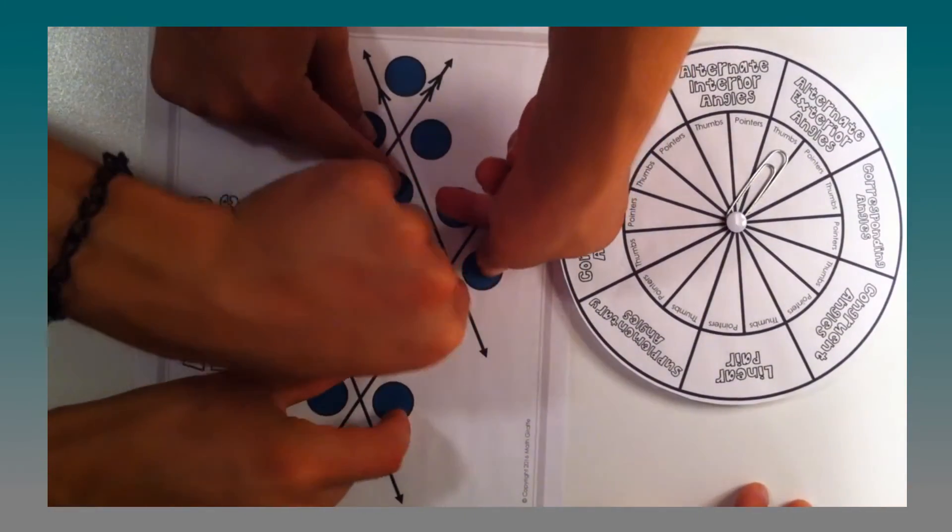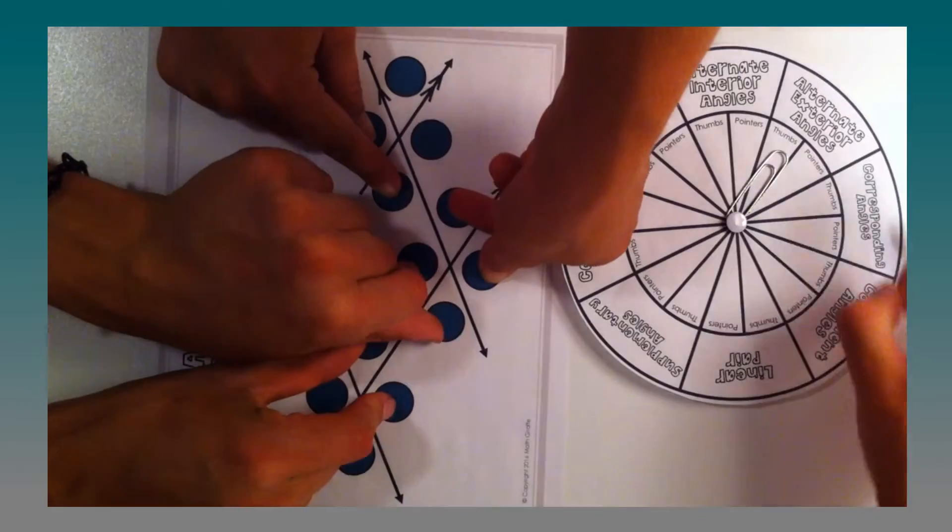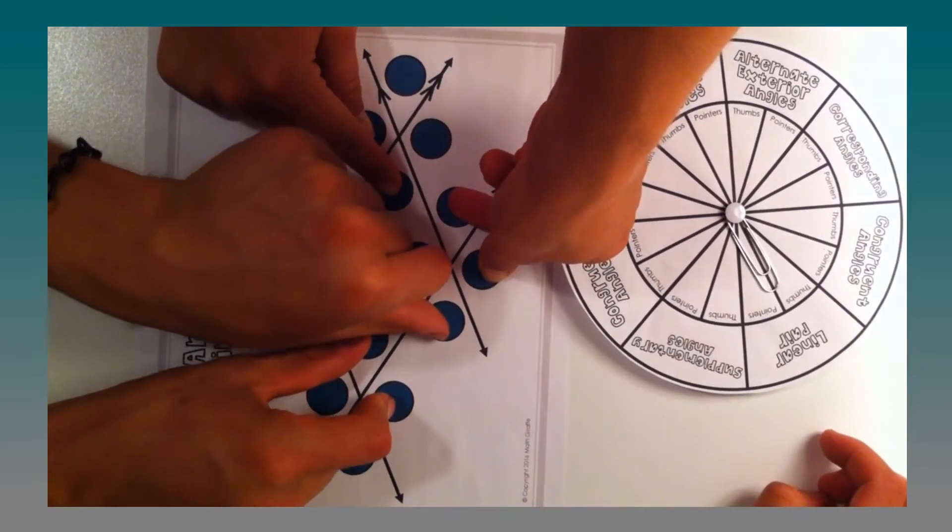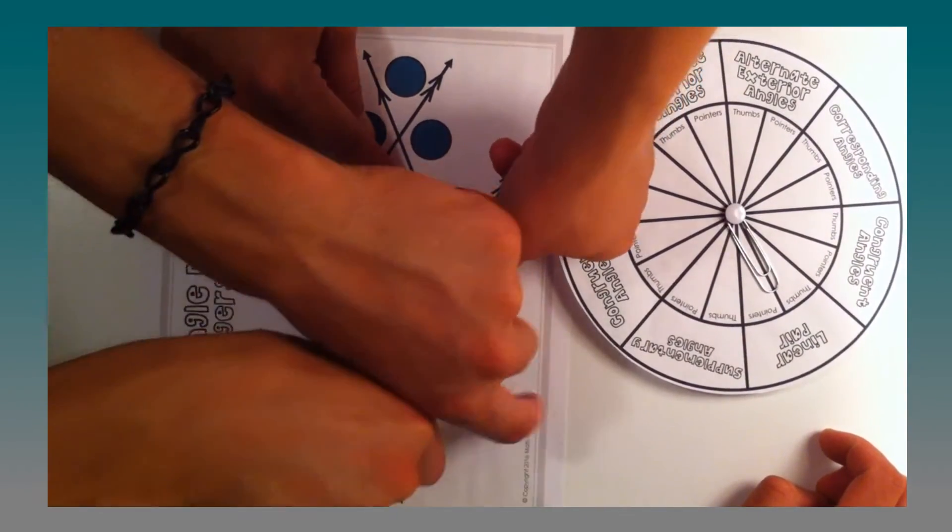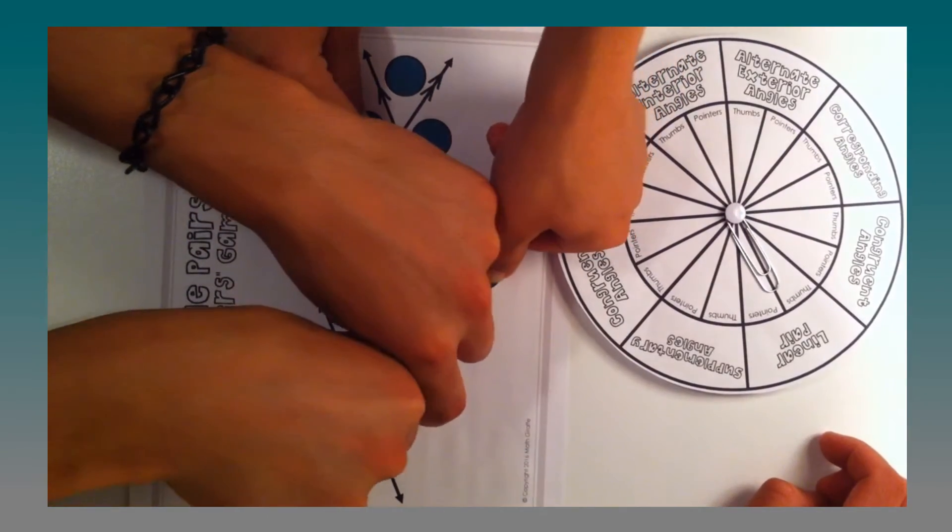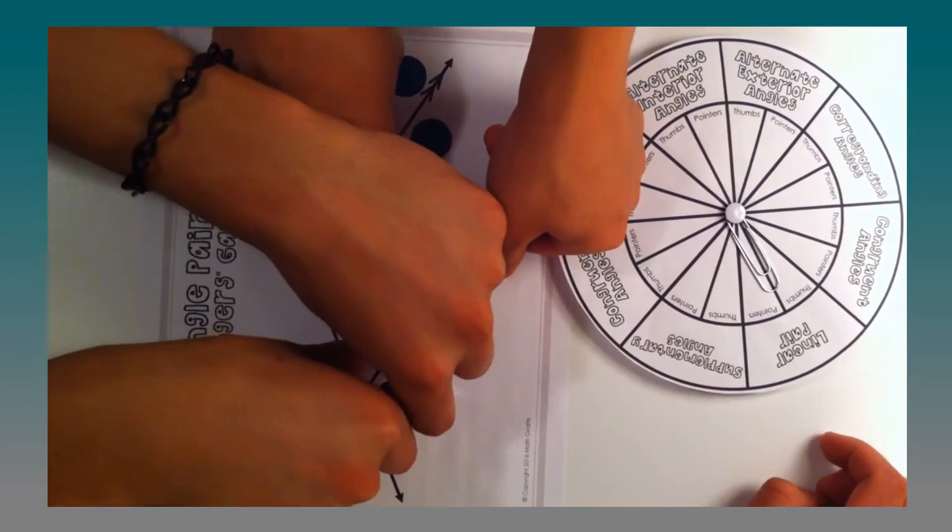And then once everyone's got that all set then you spin it again and so then this time it says thumbs on alternate exterior. So while keeping the pointers on the previous pair then they have to also put their thumbs on a pair of alternate exterior.